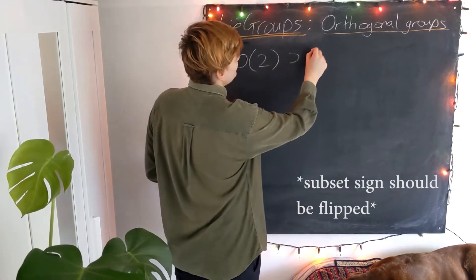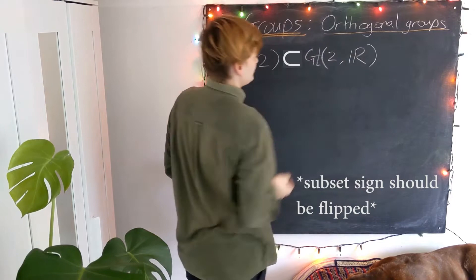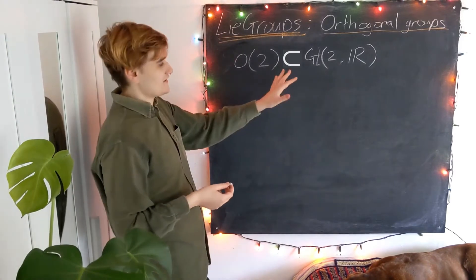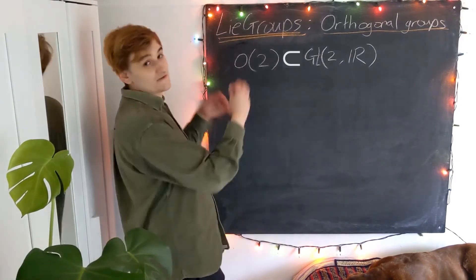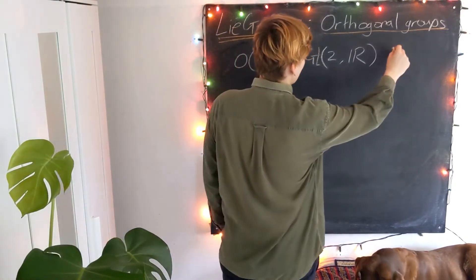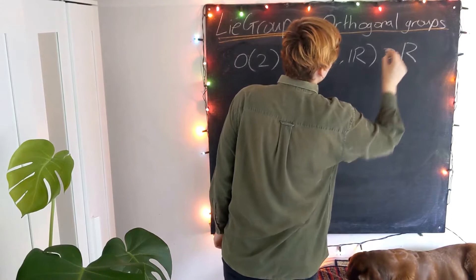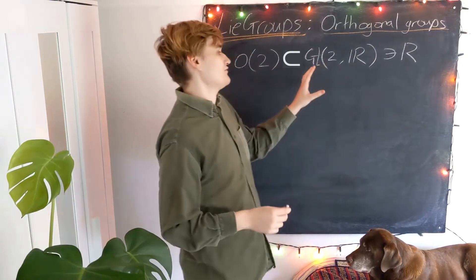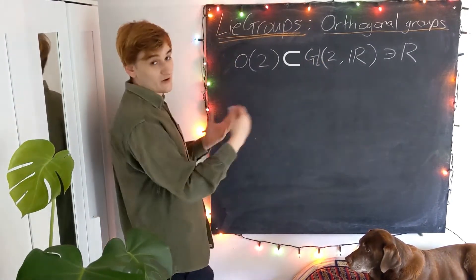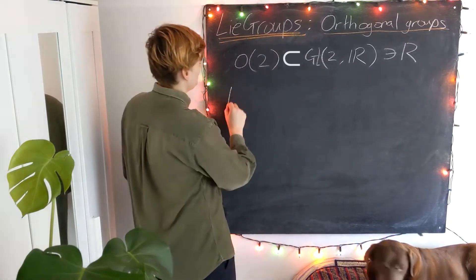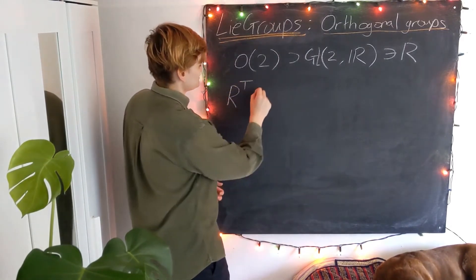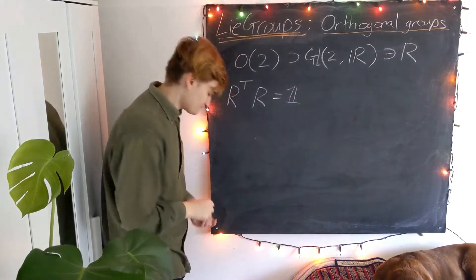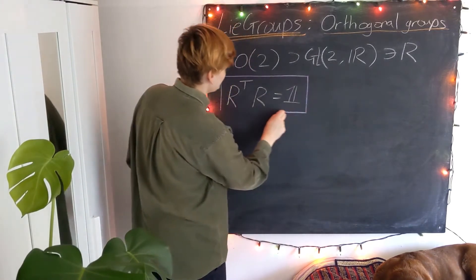Orthogonal groups are of course a subset of the general linear group of 2×2 matrices. The general linear group is the set of invertible matrices, and now we impose some additional structure. I'm going to call my group elements R, and we form the orthogonal group by taking the subset of GL and imposing the condition that these matrices are orthogonal, which means that R-transpose times R equals the identity. Any matrix that satisfies this is known as an orthogonal matrix.